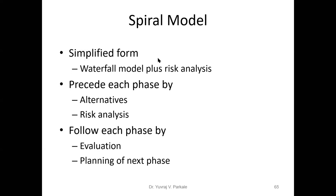In each phase, you consider different alternatives for designing the project, identify risks, and prepare solutions — all within that phase. Each phase is followed by evaluation and planning of the next phase. You evaluate the performance of each phase and then plan accordingly. That is what is done in the spiral model.